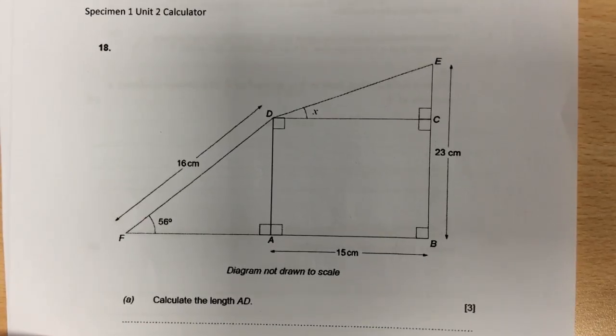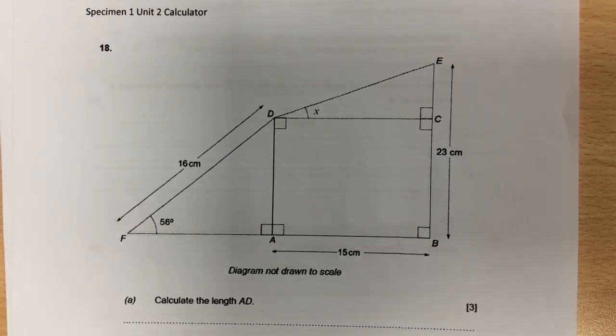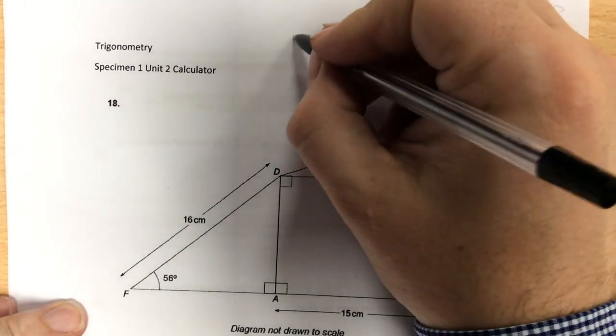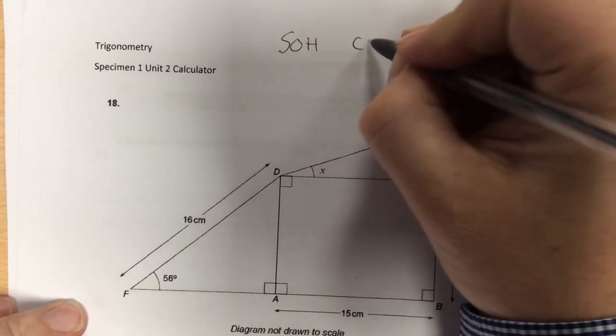When you're looking for trigonometry, you're looking for right-angled triangles. With trigonometry, there are three rules you need to know. It goes by SOHCAHTOA.